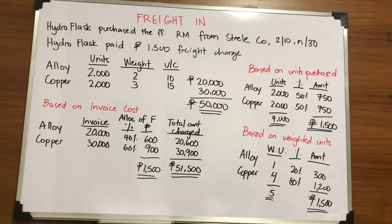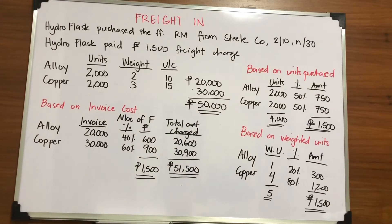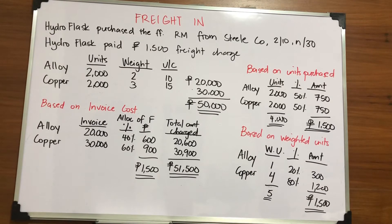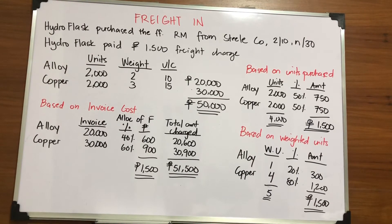Now we determine how to allocate the freight when there are multiple raw materials in one delivery. For a single freight charge of $1,500 covering alloy and copper, there are three methods of allocation: first by invoice cost, second by units purchased, and third by weighted units.